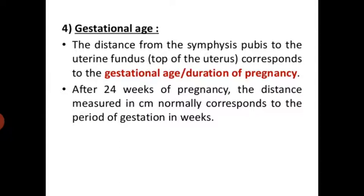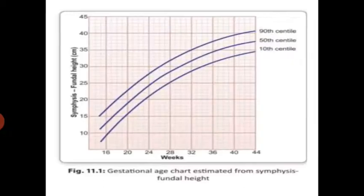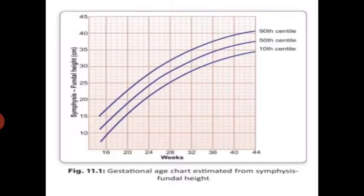The distance from the symphysis pubis to the uterine fundus corresponds to gestational age and duration of pregnancy. After 24 weeks of pregnancy, the distance measured in cm normally corresponds to the period of gestation in weeks. The symphysis-fundal height gestation age chart estimates gestational age from 20 to 40 weeks based on symphysis-fundal height in cm.